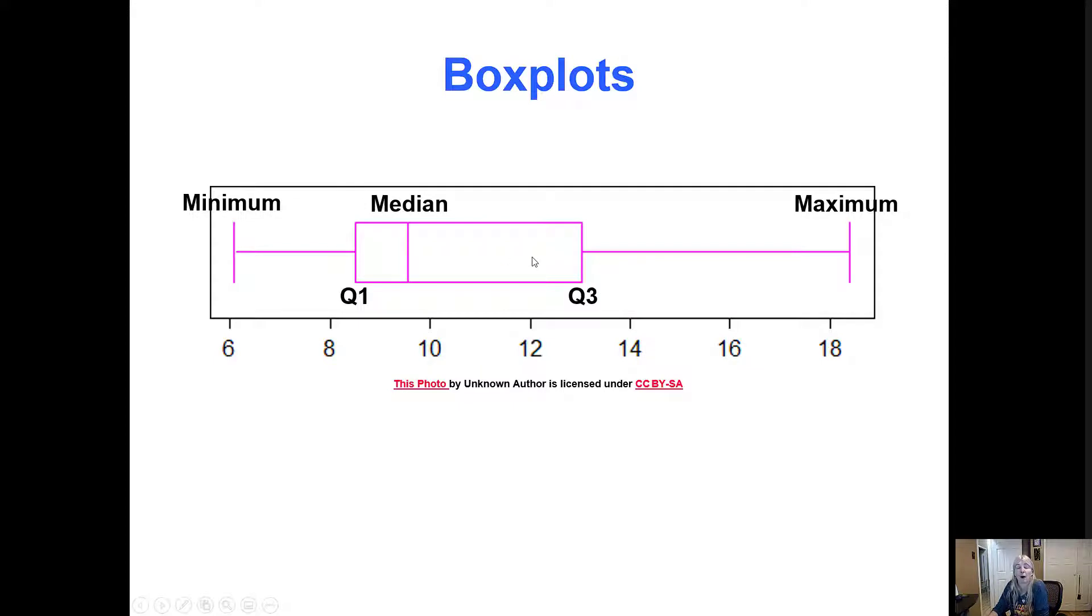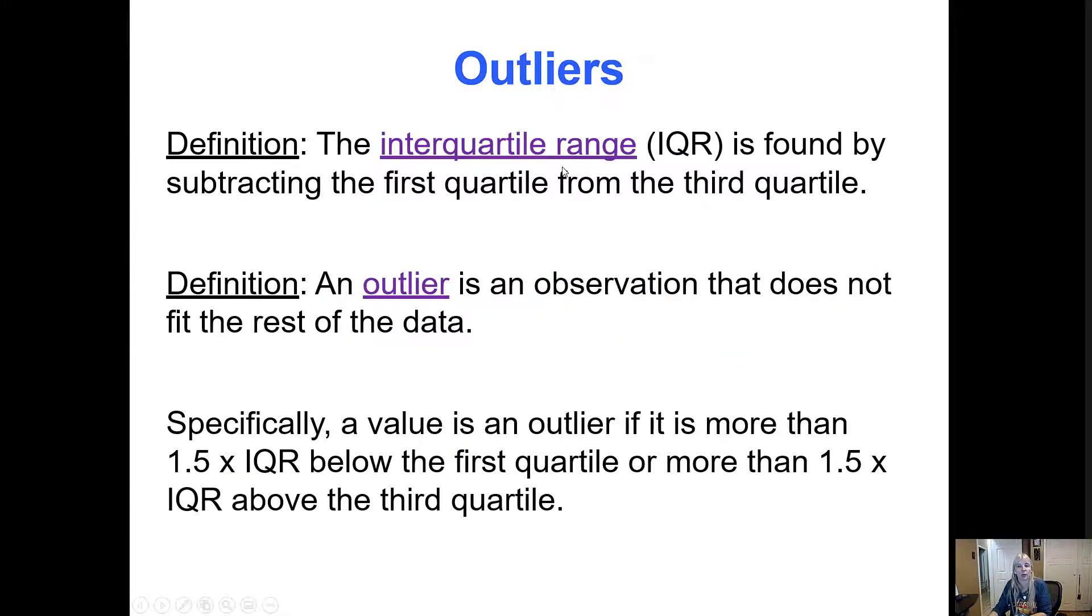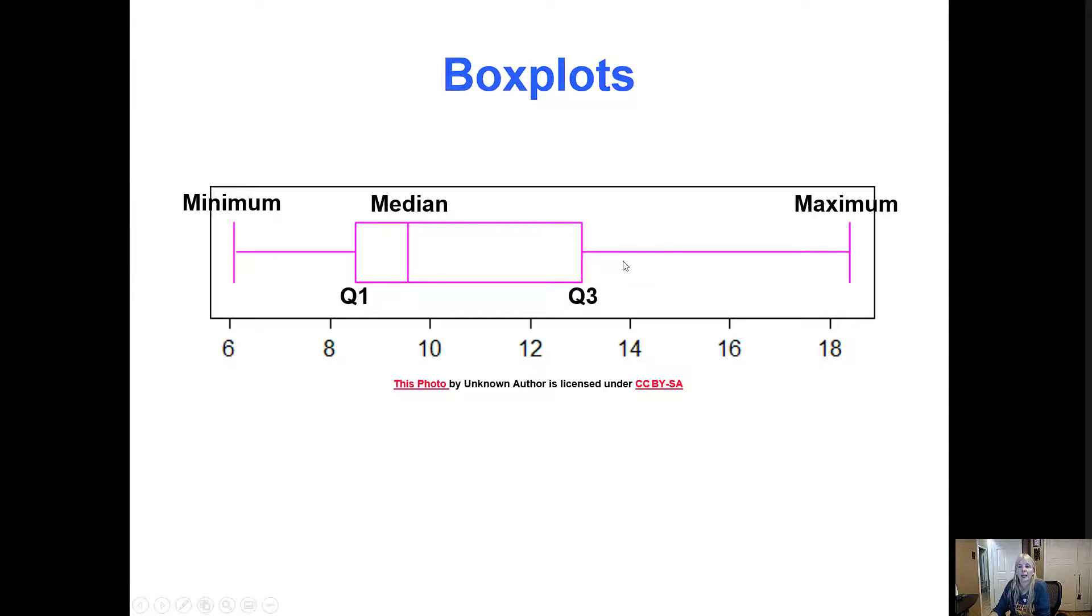Box plots are very nice to be able to see your data. If you notice the box here, so the actual box is showing from Q3 to Q1, which again is IQR. And anything outside of the box, they call this typically a box and whisker plot, they call these the whiskers, then would go up to your maximum value and your minimum value.